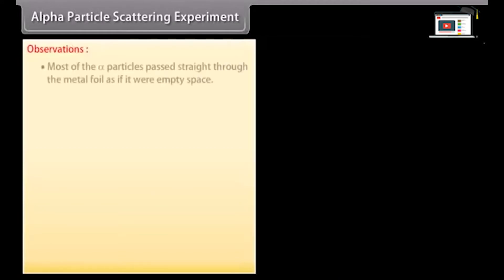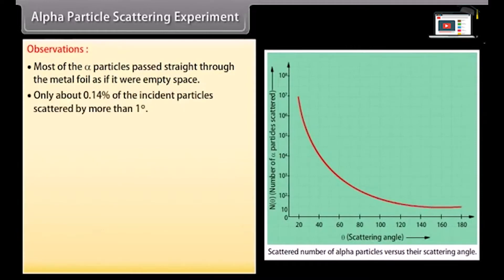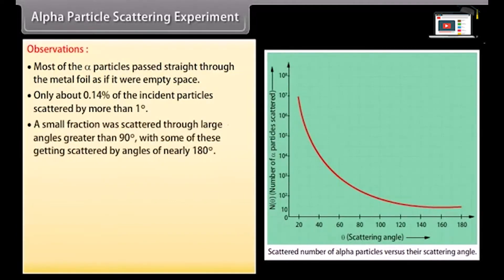Observations: Most of the alpha particles passed straight through the metal foil as if it were empty space. Only about 0.14% of the incident particles were scattered by more than 1 degree. Small fractions were scattered through large angles greater than 90 degrees, with some getting scattered by angles of nearly 180 degrees.